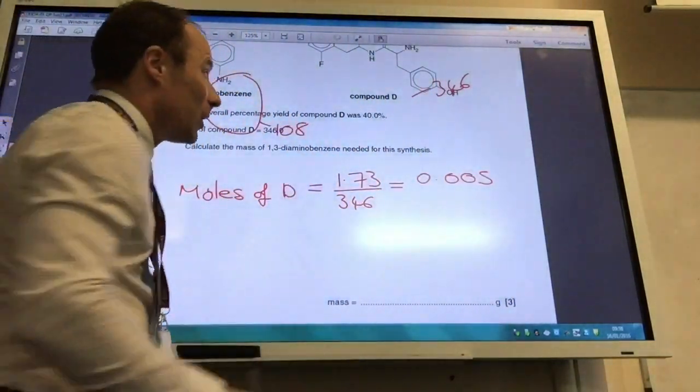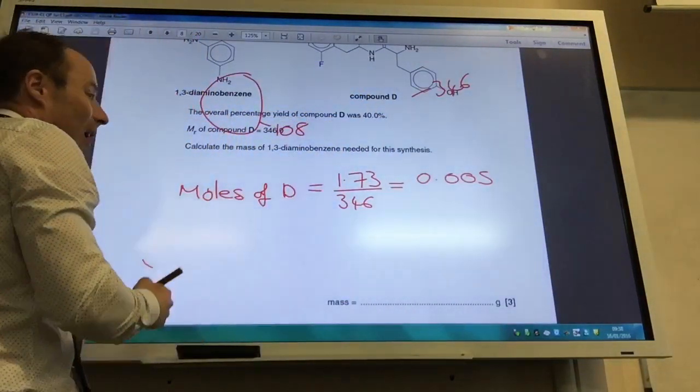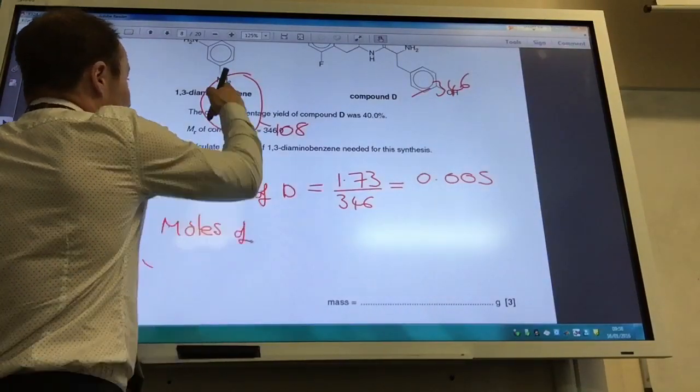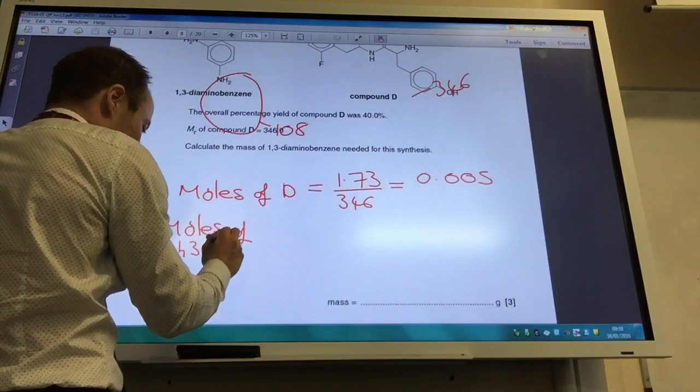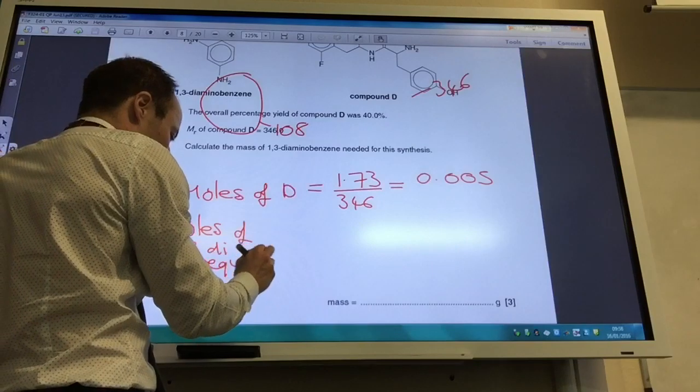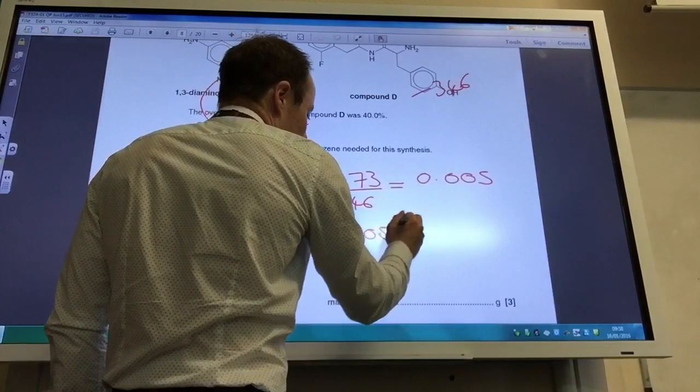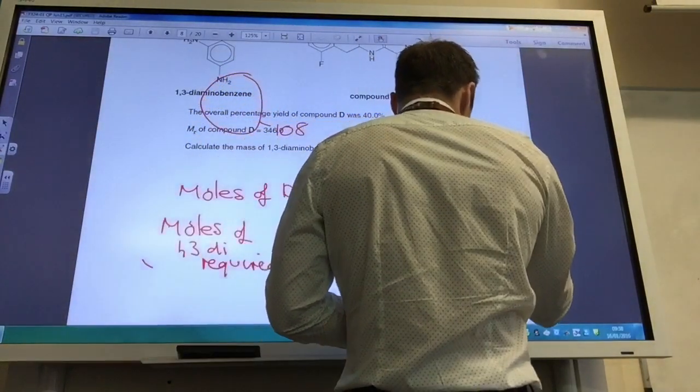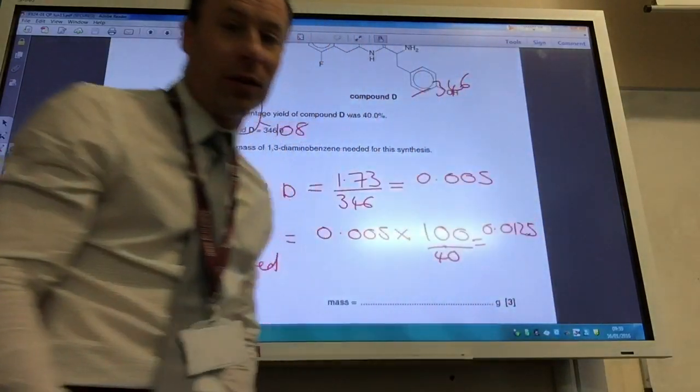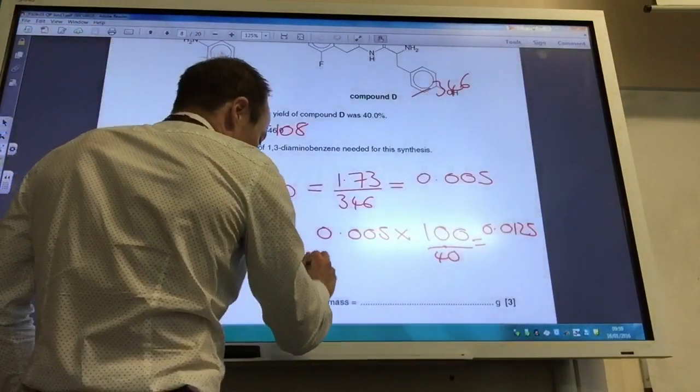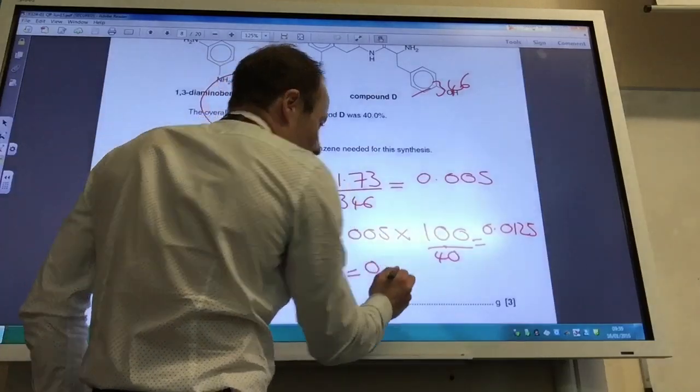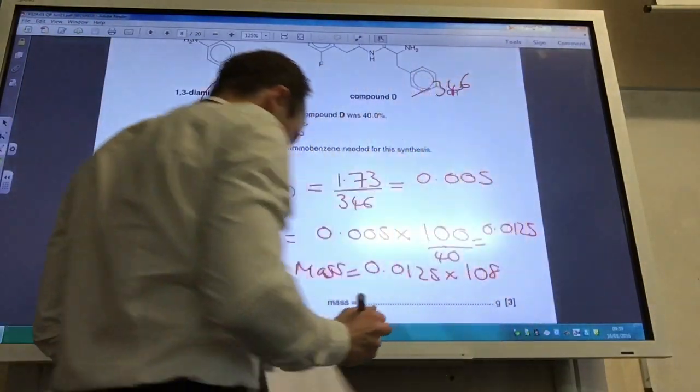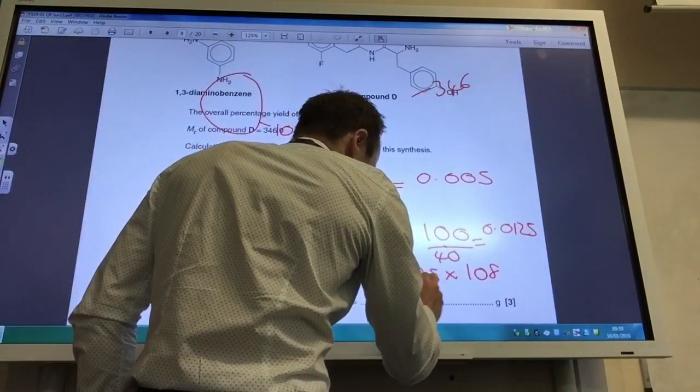However, it was only 40% yield, so in order to work out how much 1,3-diaminobenzene I needed, I need to scale that up to account that I only get a 40% yield. So moles of 1,3-diaminobenzene required is going to be 0.005, but you need to times it by 100 and divide by 40 because it's only 40% yield. If you do that, you get 0.0125 moles. Then the final thing is convert that into a mass. The mass is obviously moles times molar mass, 0.0125. The molar mass we set up here was 108, and if you do that, the answer is 1.35 grams.